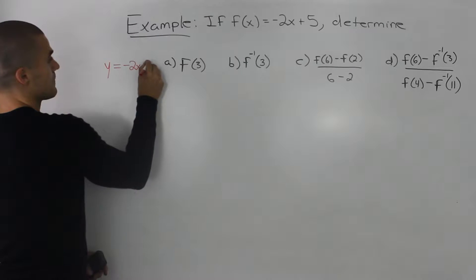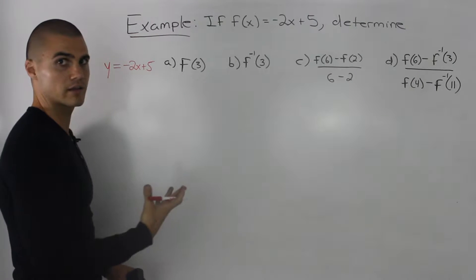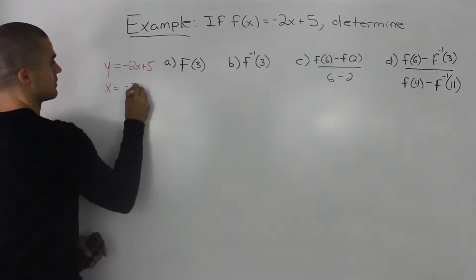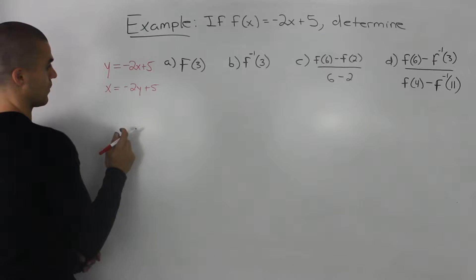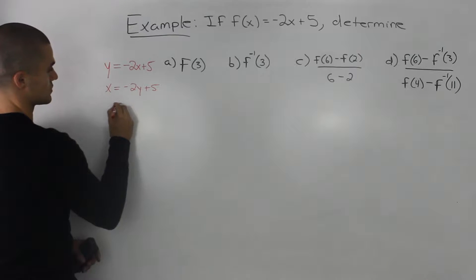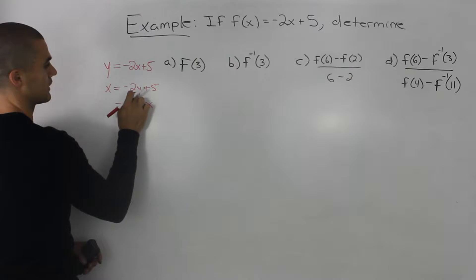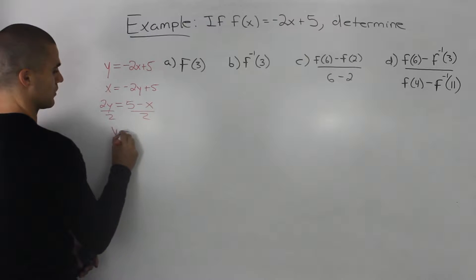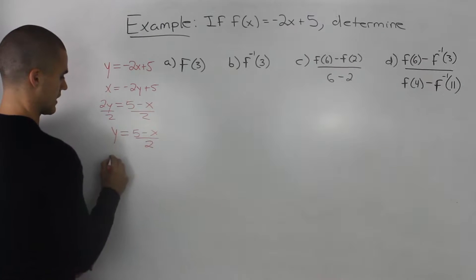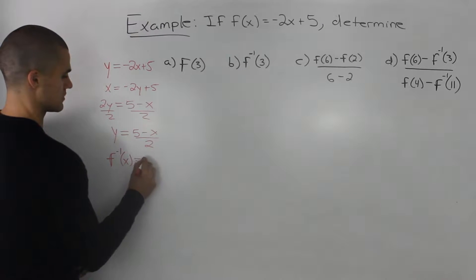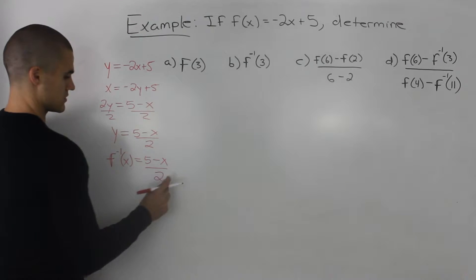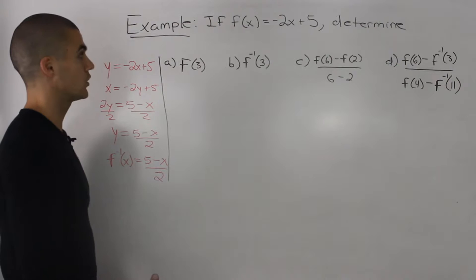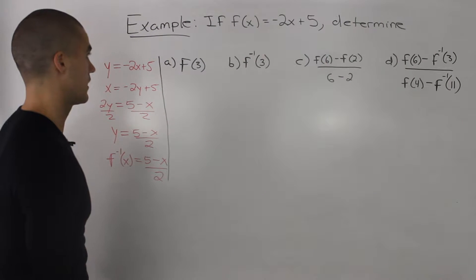So y equals negative 2x plus 5. To find the inverse algebraically, the steps are: interchange the x and y values and then isolate for y. Bringing the x over we have 5 minus x, and bringing the negative 2y over we have positive 2y. Dividing both sides by 2, we get y equals (5 minus x) over 2, and we can rewrite this as the inverse. So (5 minus x) over 2 represents the inverse of negative 2x plus 5. Now we can go into determining each of the separate questions.